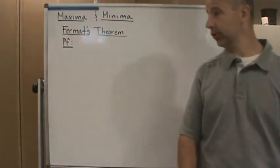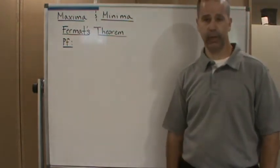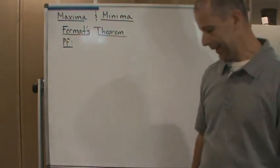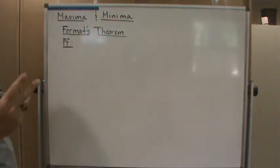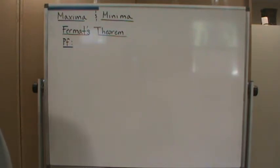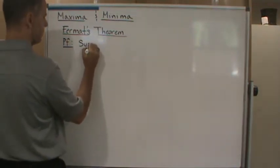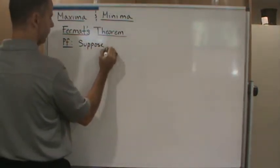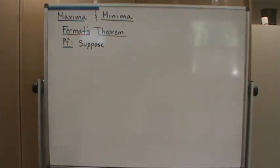Welcome back. Now we're going to do the proof for Fermat's theorem. So the first thing we're going to do is remember the two things that were the 'if' part, or given. We're going to assume those things. So suppose f has a local extremum and f is differentiable.